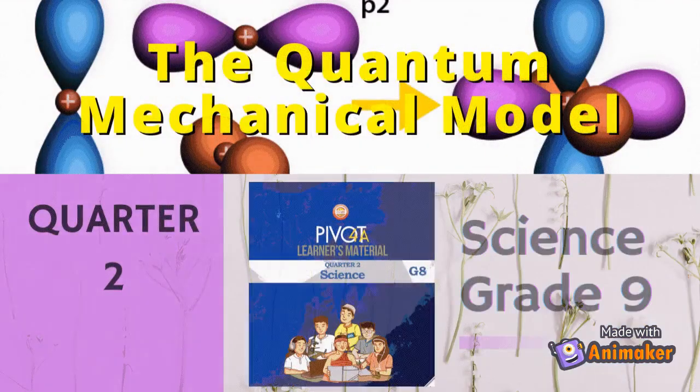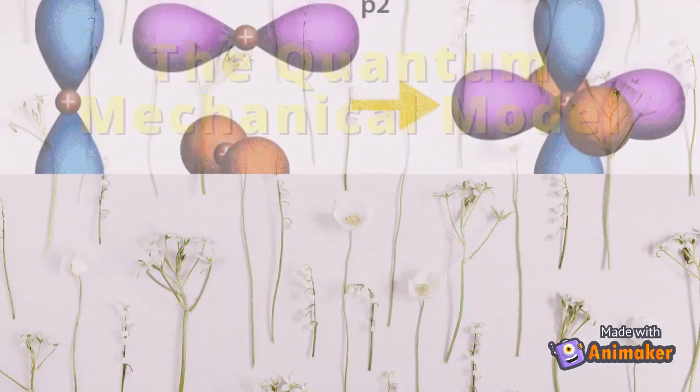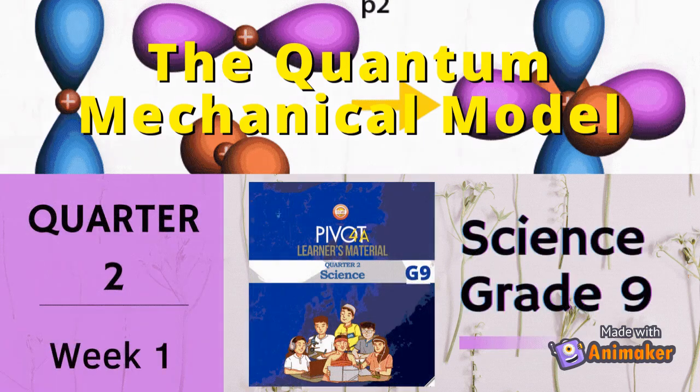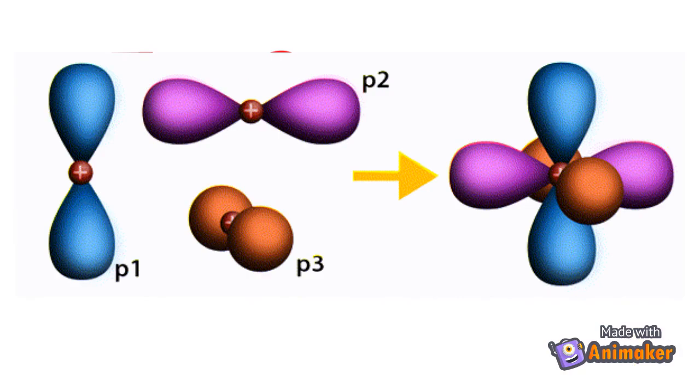In this lesson, you will learn how the quantum mechanical model of the atom describes the energies and positions of the electrons. In particular, we will develop a picture of the electron arrangements in atoms, a picture that allows us to account for the chemistry of the various elements.